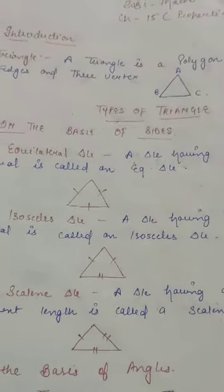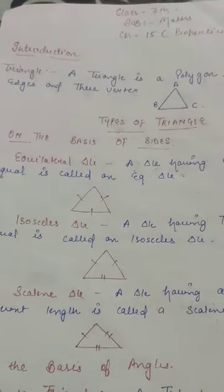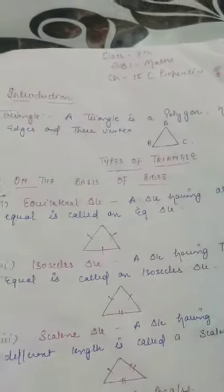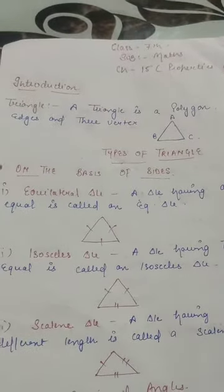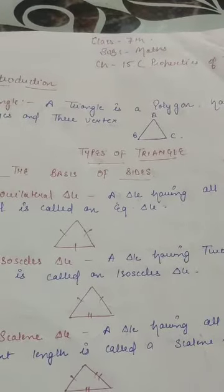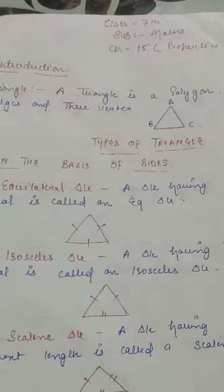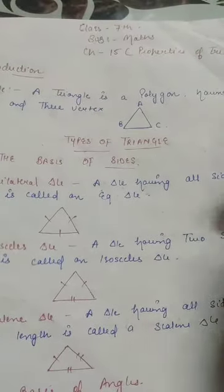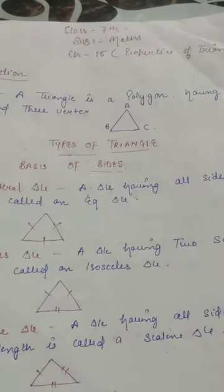Good morning 7th class. From today we will start our new chapter, that is chapter number 15: Properties of Triangles. You all learned about triangles in your 5th and 6th class — the triangle definition, types on the basis of sides, and on the basis of angles. Before we start the new properties, we will review the previous definitions.